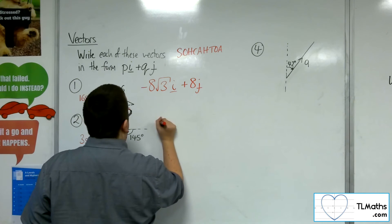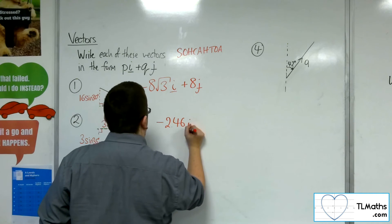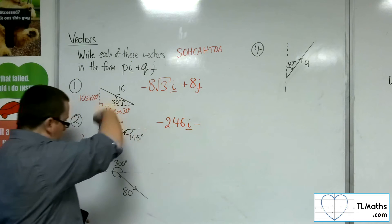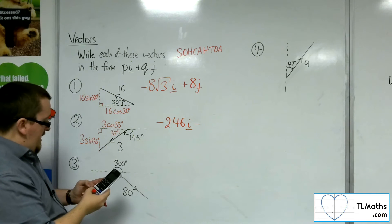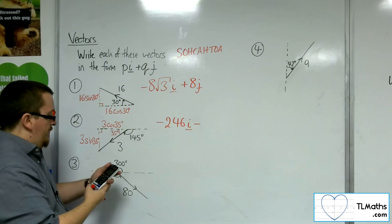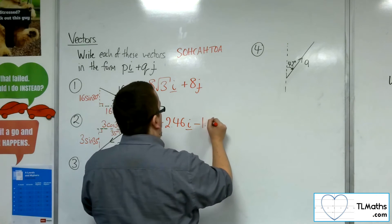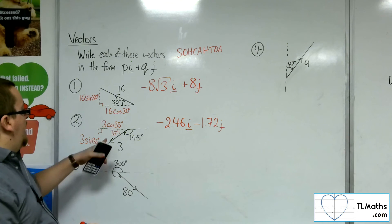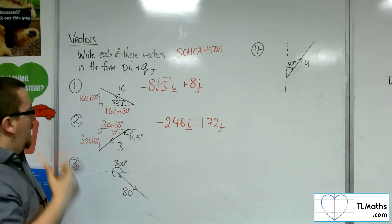So 3 times cosine of 35 is 2.457. So 2.46, so minus 2.46i, because we're going to the left. Take away, because we're going down. So 3 times sine of 35, so 1.72j, both to 3 significant figures. So that is the vector in component form for that one.